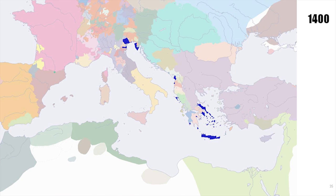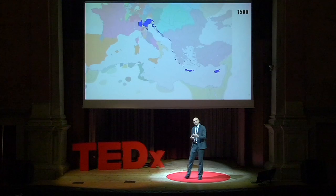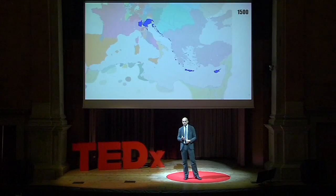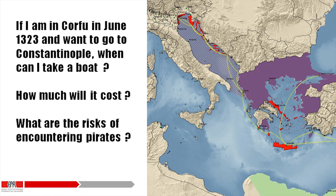We can reconstruct the journey of the Venetian maritime empire — how it progressively controlled the Adriatic Sea, how it became the most powerful medieval empire of its time, controlling most of the sea routes from the east to the south. And because in these maritime routes there are regular patterns, you can go one step beyond and create a Mediterranean simulator, capable of reconstructing even the information we are missing, answering questions like a route planner: if I am in Corfu in June 1323 and want to go to Constantinople, where can I take a boat, probably with one to three days' precision?